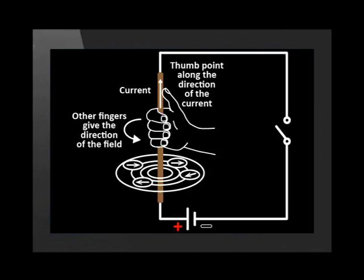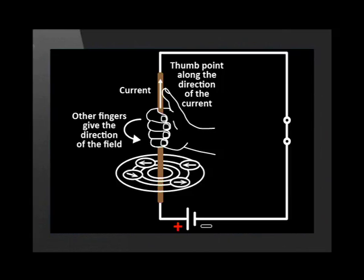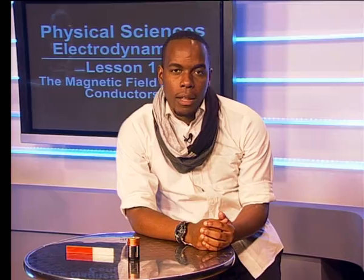We can even use our right hand to predict which way the field will flow. If we show the direction of conventional current — positive to negative — using our thumb, and then use our fingers to wrap around the conductor, they will show the direction of the magnetic field. My thumb is pointed from the red positive terminal to the black negative terminal. When I switch the power on, the compasses move in the same direction as my fingers.